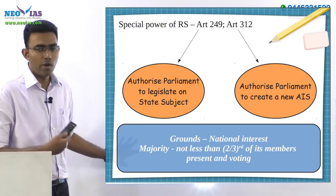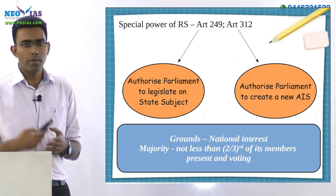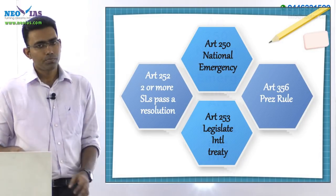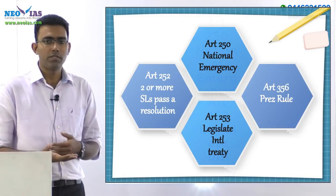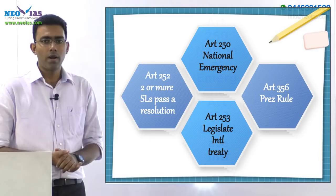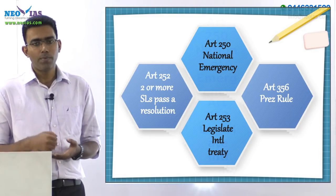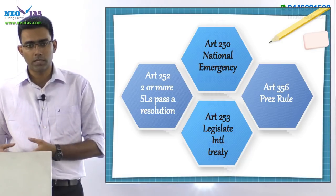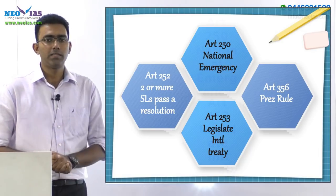There are four other areas wherein Parliament can also legislate on state subjects. Article 250 empowers Parliament to legislate on state subjects when a national emergency has been declared. There is also a provision wherein when two or more states pass a resolution requesting Parliament to legislate on a particular state subject, Parliament can legislate on it in such a case.